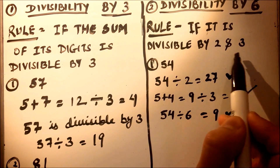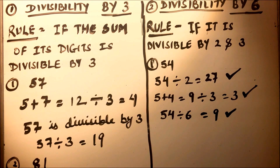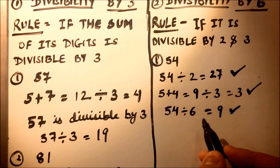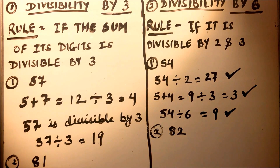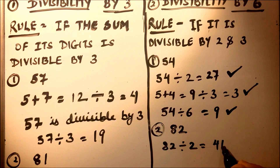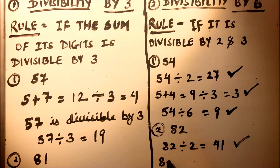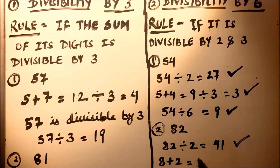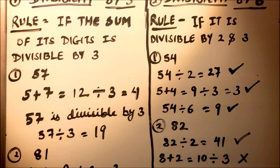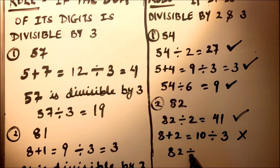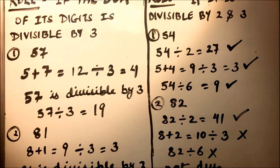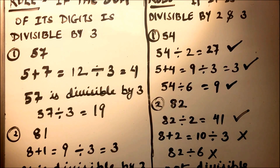The rule is: we need to check that the number is divisible by both 2 and 3. If a number is divisible by 2 but not by 3, it is not divisible by 6. Let's take the number 82. It is divisible by 2 since it is even: 82 divided by 2 is 41. But 8 plus 2 is 10, which is not divisible by 3. So 82 is not divisible by 6.